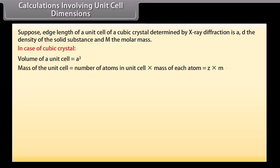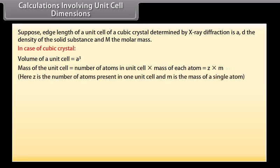Mass of the unit cell is equal to number of atoms in unit cell times mass of each atom, which is equal to Z times m. Here Z is the number of atoms present in one unit cell and m is the mass of a single atom. Mass of an atom present in the unit cell.